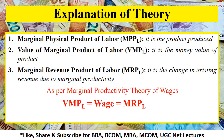The three components are: marginal physical product of labor, the value of marginal product of labor, and marginal revenue product of labor. The marginal physical product of labor is basically the product that is produced by the labor. The value of marginal product of labor is the money value of that produced product. The marginal revenue product of labor is the change in existing revenue due to marginal productivity. This theory states that VMPL equals wages equals MRPL.